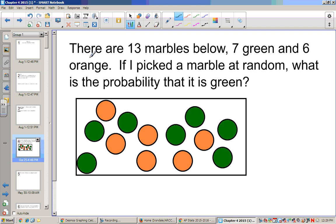This is one example. There are 13 marbles below. Assume these are three-dimensional. 7 green and 6 orange. If I were to pick a marble at random, what is the probability that it's green? Now, to use probability terminology, we would write probability green is going to be the number of the green over the number of the sample space.